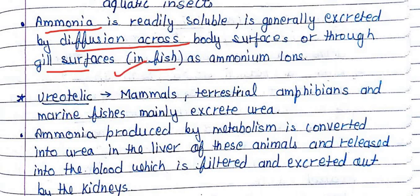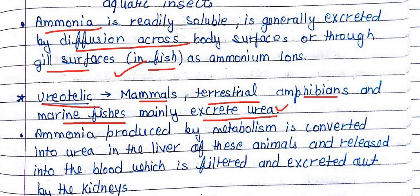The second type of animals are called ureotelic. Ureotelic organisms are those that excrete in the form of urea. Examples include mammals, terrestrial amphibians, and marine fishes. These organisms excrete nitrogen in the form of urea, so they are called ureotelic.